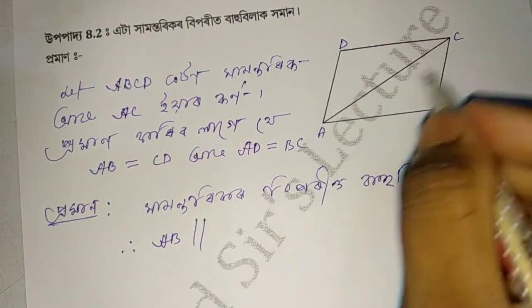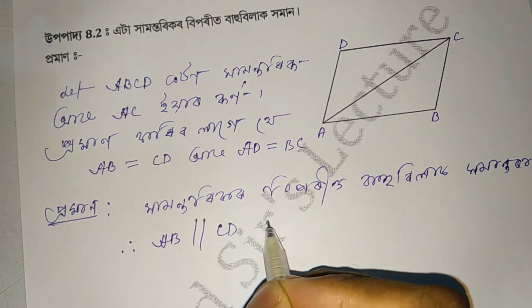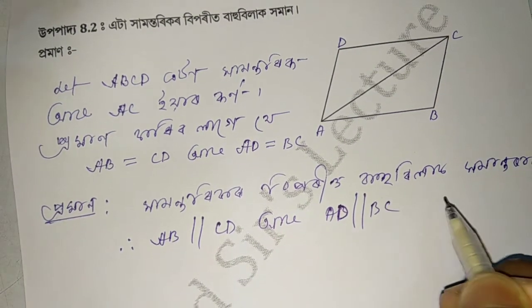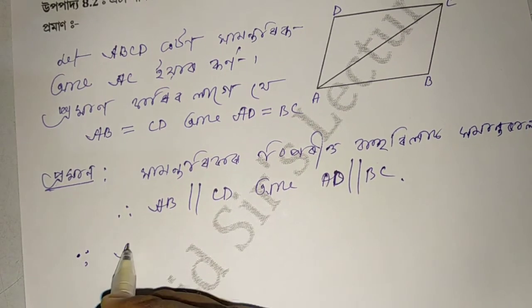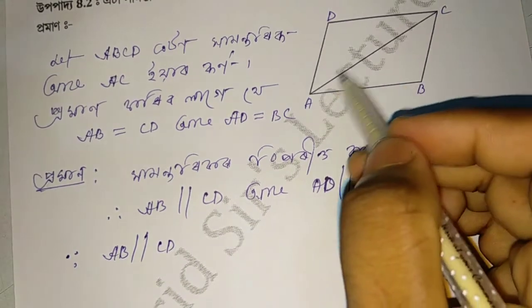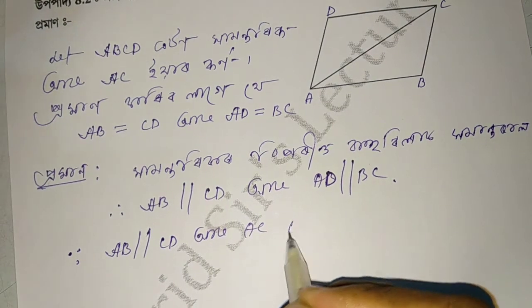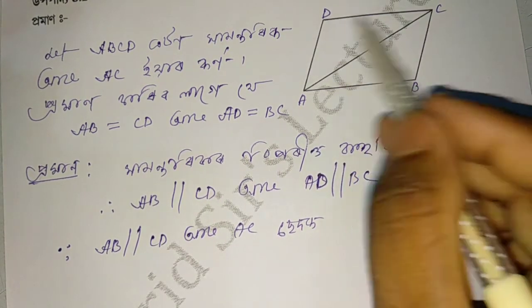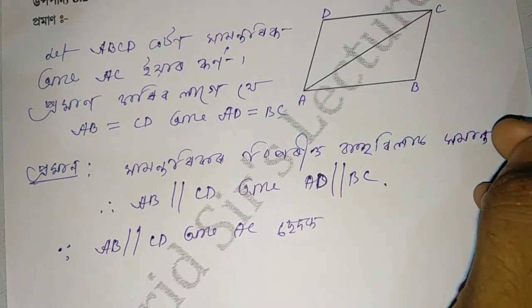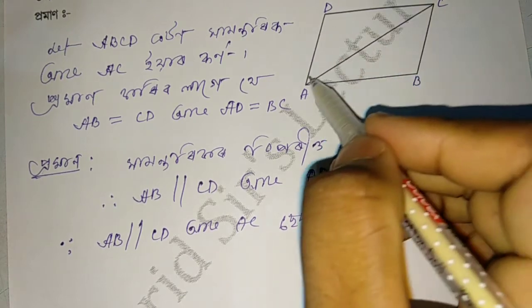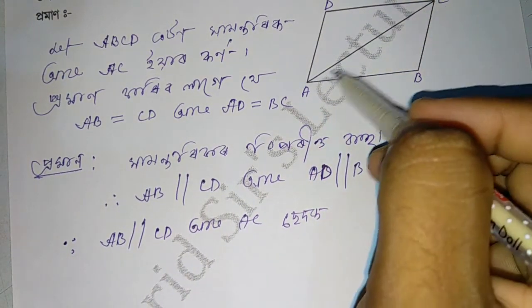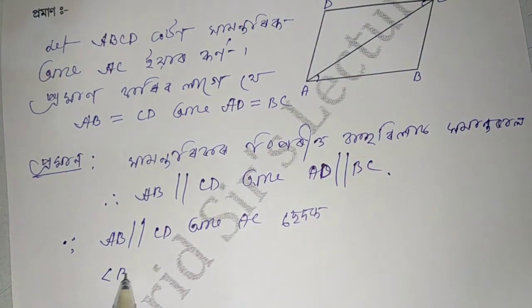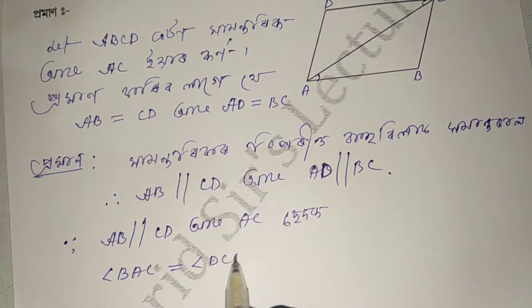BC and AD are equal, DC and AD are equal to BC. AB is equal to CD. This is to track the description.